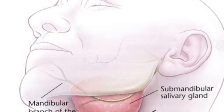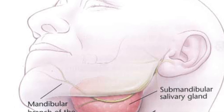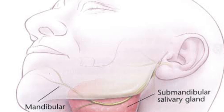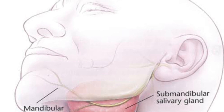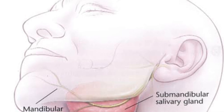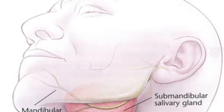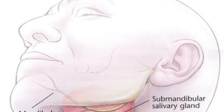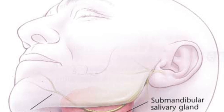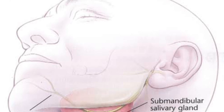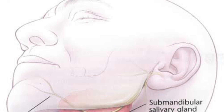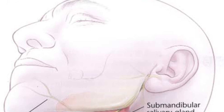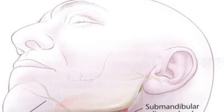Today's topic is about submandibular salivary gland anatomy. It is a paired, second largest salivary gland, second to the parotid gland. The submandibular salivary gland weighs about 10 to 15 grams and is walnut in size. It is situated in the digastric triangle below the mandible.